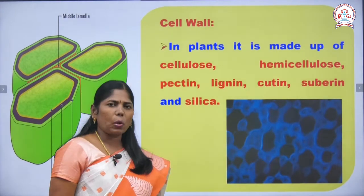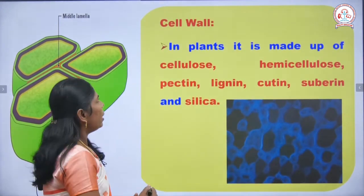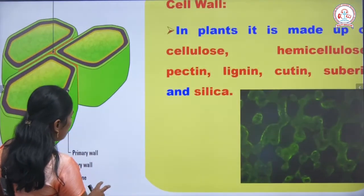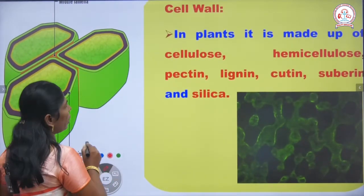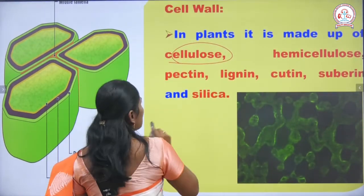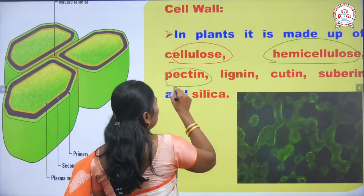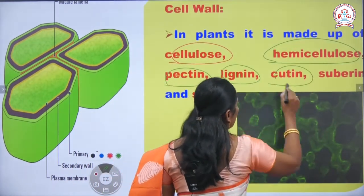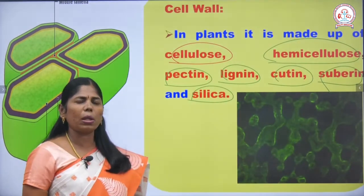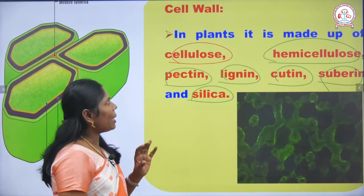In plants, the cell wall is made up of cellulose, hemicellulose, pectin, lignin, cutin, suberin, and silica. These are all considered as cell wall materials.